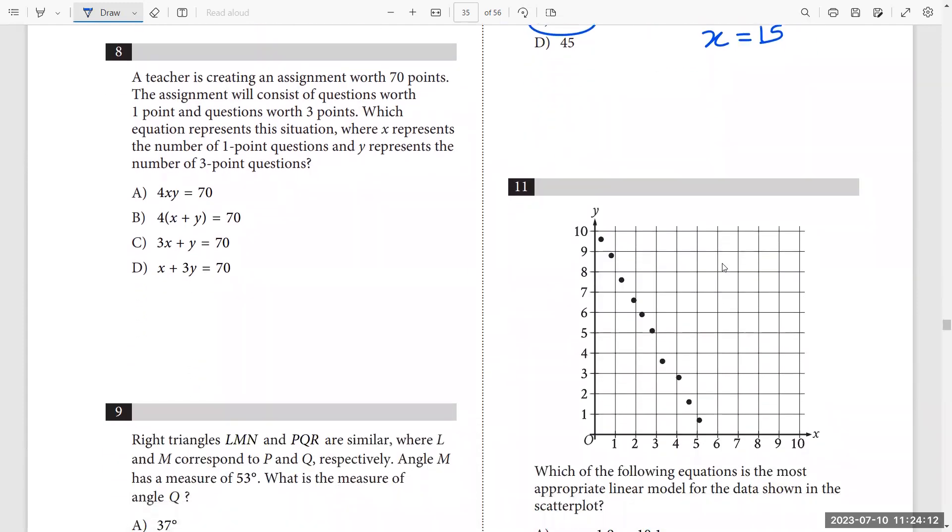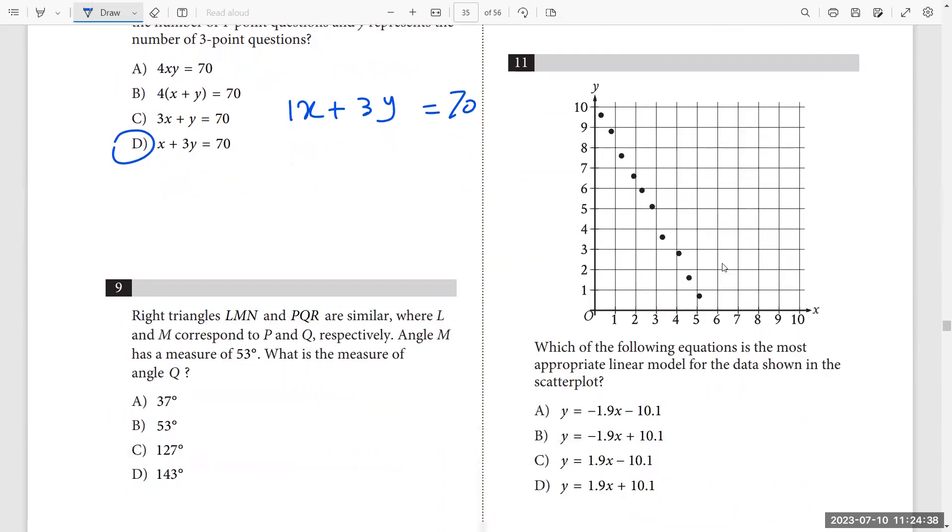Teacher is creating an assignment worth 70 points. The assignment will consist of questions worth one point and questions worth three points. Which equation represents this situation where x represents the number of one point, so I have 1x plus, and y represents the number of three points questions, so 3y. So 1x plus 3y equals 70. It's very simple.